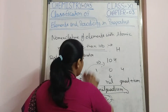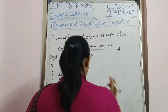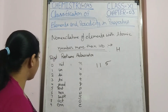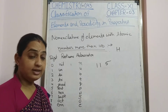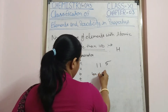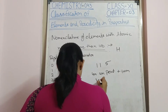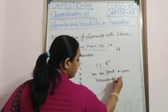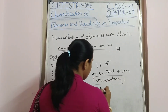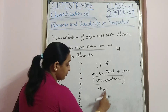Similarly, we can name other elements. For atomic number 115: one is 'un', one is again 'un', five is 'pent', plus 'ium' at the end. So the name is 'ununpentium', and the symbol is U, U, P — that is Uup.